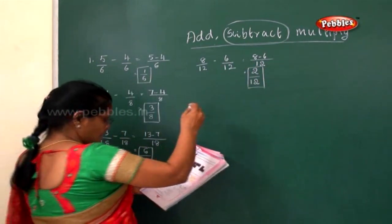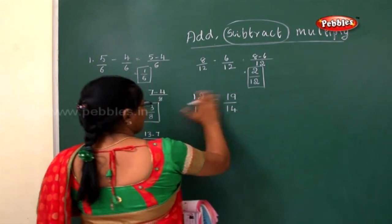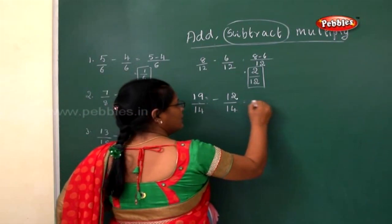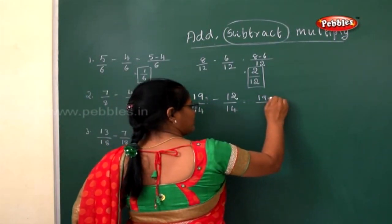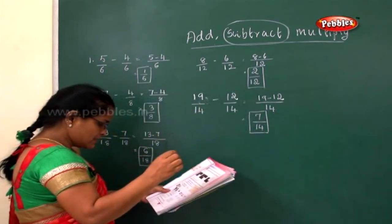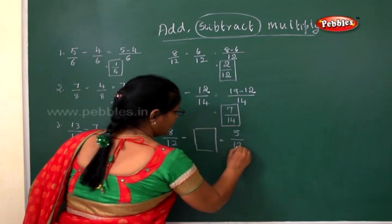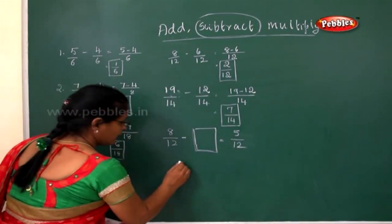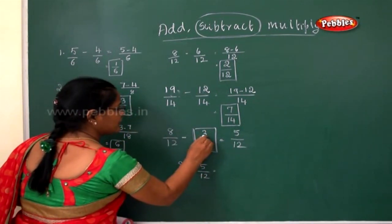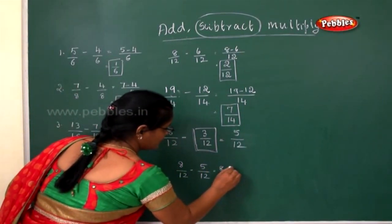Next sum: 13/18 minus 7/18 — take common denominator 18, and 13 minus 7 equals 6, so the answer is 6/18. Next: 8/12 minus 6/12 — take the common denominator, write 8 minus 6, which equals 2, so the answer is 2/12. Next sum: 19/14 minus 12/14 — take the common denominator and write 19 minus 12, which equals 7, so the answer is 7/14.